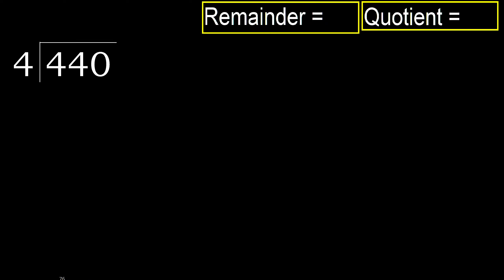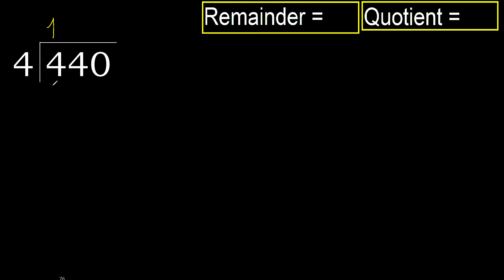440 divided by 4. 4 is not less, therefore work with 4. 4 multiplied by which number is nearest to 4 but not greater? 4 multiplied by 2 is 8 — 8 is greater. Multiply by 1 is 4, which is not greater. OK.